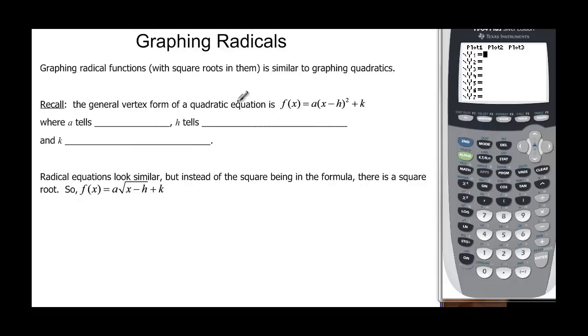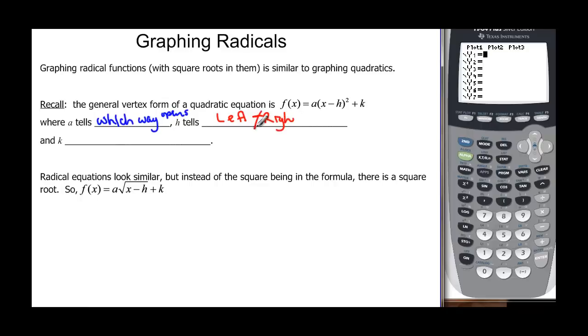Let's remember what we knew about quadratics. The general vertex form quadratic equation was f(x) = a(x - h)² + k, where a tells us which way it opens, h tells us the left and right shifts, and k tells us how much we go up or down.